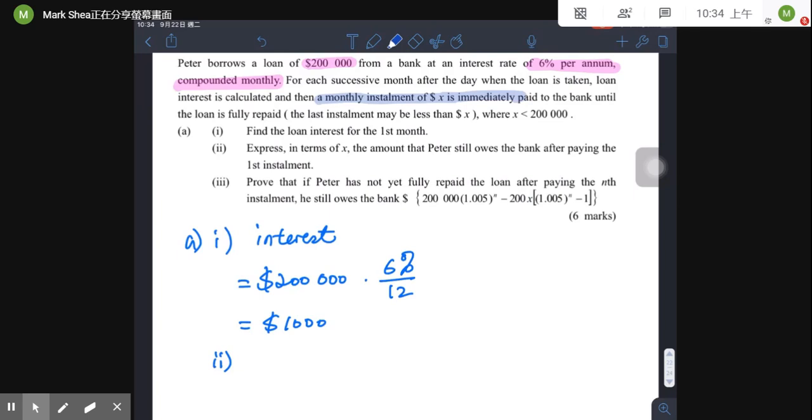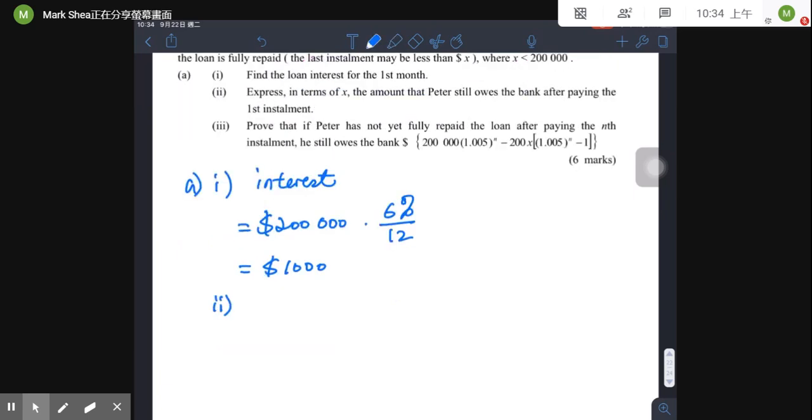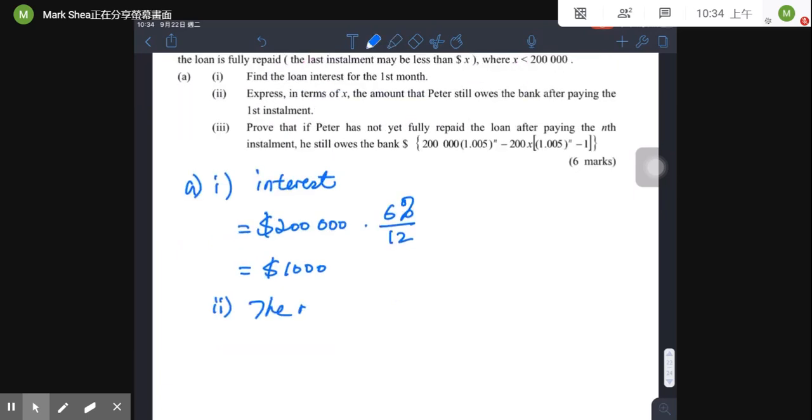X dollars. So the amount Peter still owes to the bank is given by this one and the required amount, let me write down the answer first. This one is, we need to, we have 200,000 times (1 + 6% over 12) and then